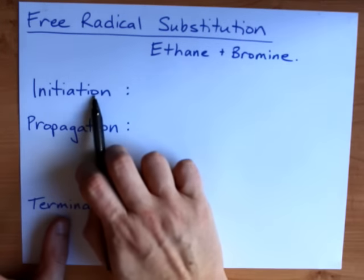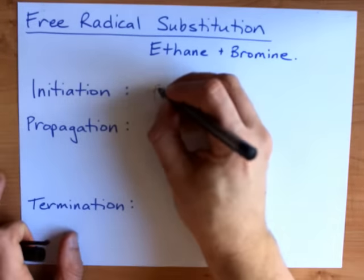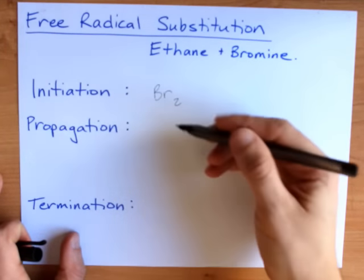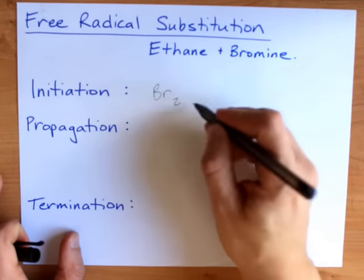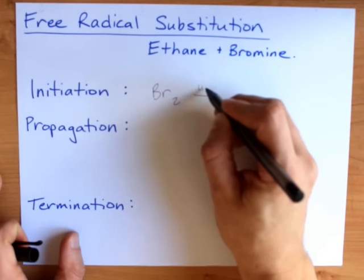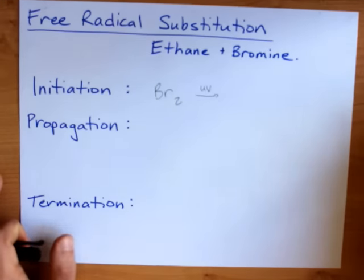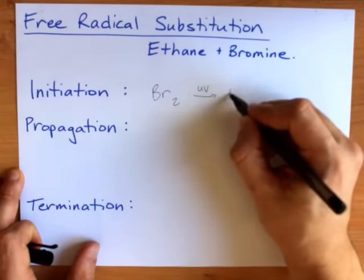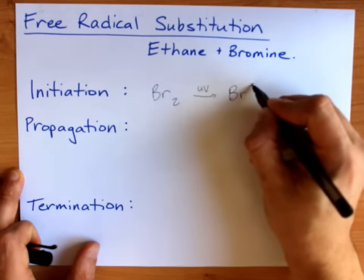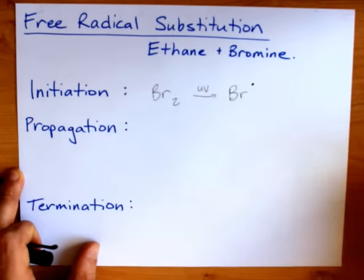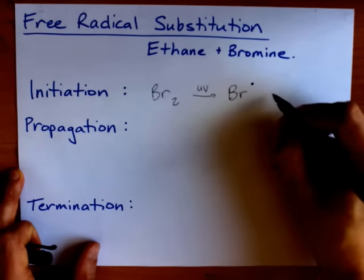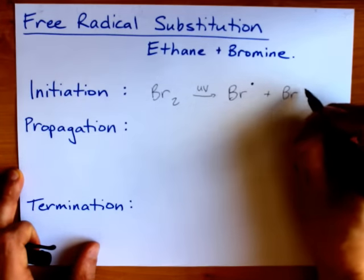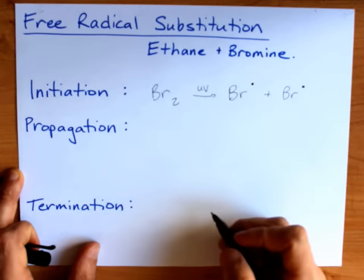And that happens in a step called initiation. In initiation, you're going to take your halogen, Cl2, Br2, whatever, and you're going to shine UV light onto it. When you do this, the bond between the two Br's breaks, and you get Br with 7 electrons. So you actually get two of these, and these are called free radicals because they have an odd number of electrons.